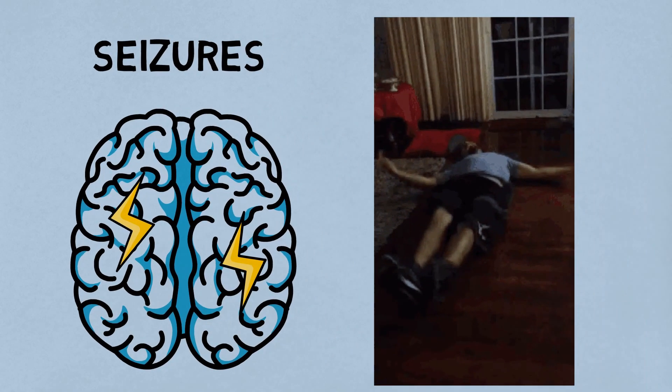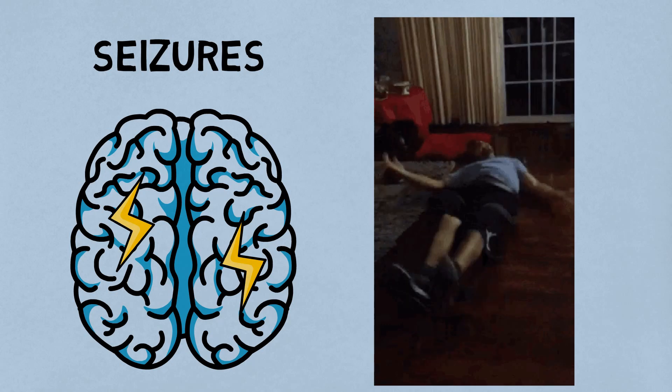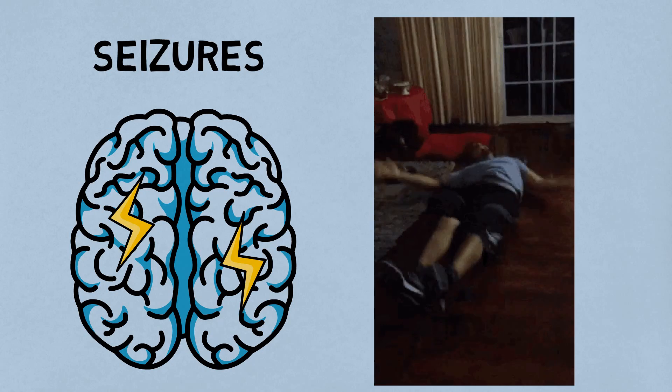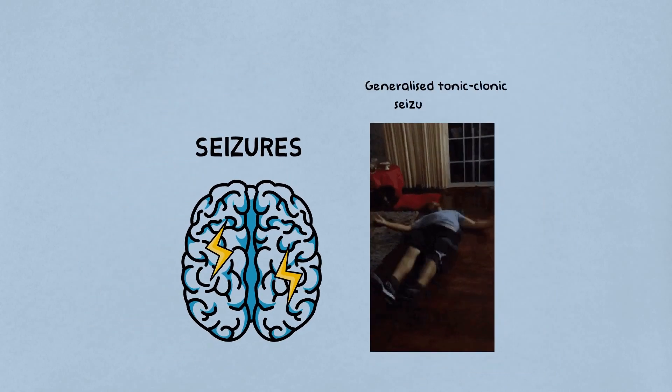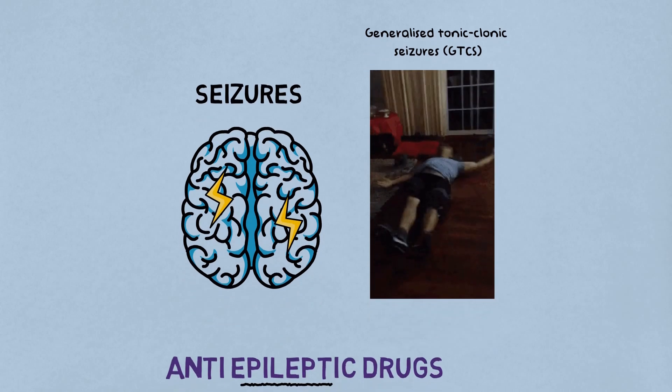For those who don't know about seizures, you would have probably seen in films or TV shows where a person suddenly falls and his whole body jerks. Actually, this is a type of seizure known as generalized tonic-clonic seizure and also the most common seizure.